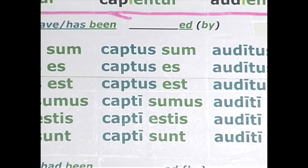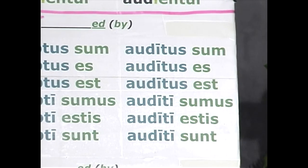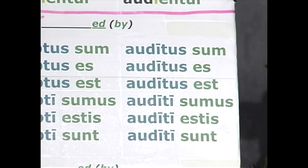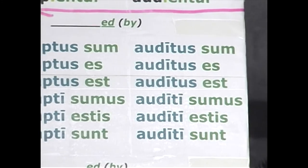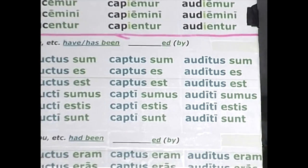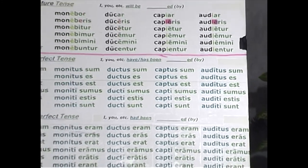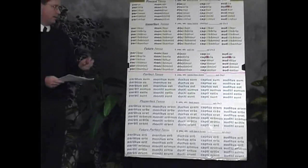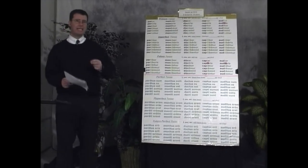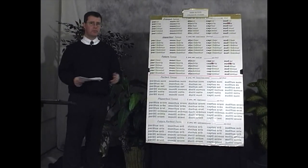And fourth conjugation: auditus sum — I have been heard, you have been heard, he has been heard, and so forth. So now you are beginning to understand why these principal parts are so important. You will save yourself so much work if you simply learn them up front when you learn the verb, because those principal parts are the key to unlocking the rest of the verbal system.